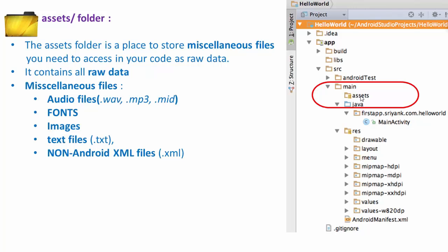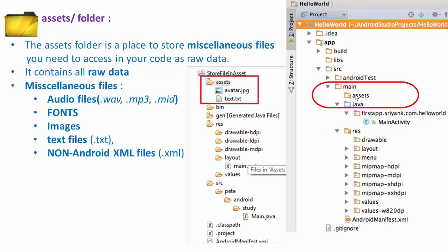This is an example of how we store files inside the assets folder — just create the assets folder and store your images like this. By default, we always store our images inside the drawable folder.